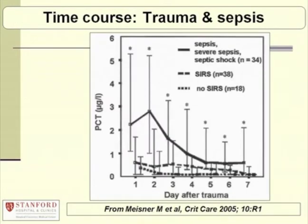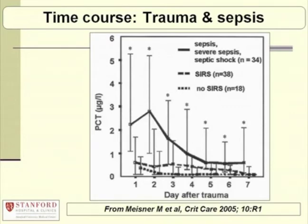The same investigators, a couple of years later, published a much better prospective study where they looked at the development of sepsis in patients who had trauma. This answers the question of whether trauma alone can elevate PCT — and the answer is yes. These patients, most of whom were not infected on admission, were victims of severe high-velocity motor vehicle accidents. This shows that an elevated PCT on admission is not necessarily indicative of infection, though it's probably predictive. Patients who had a motor vehicle accident but didn't develop sepsis had lower PCTs than those who did develop sepsis.